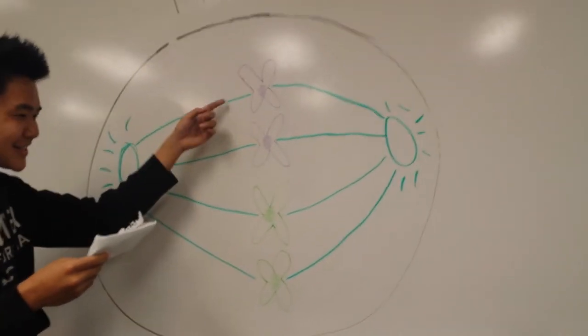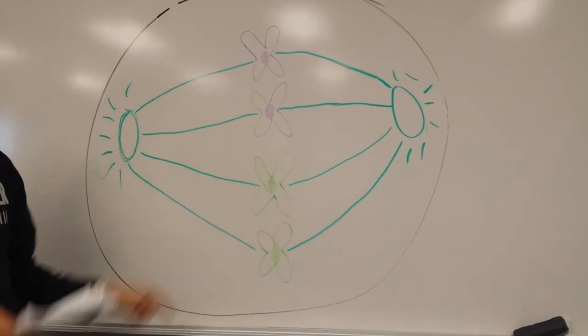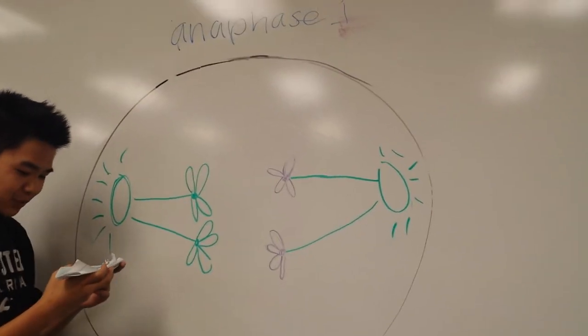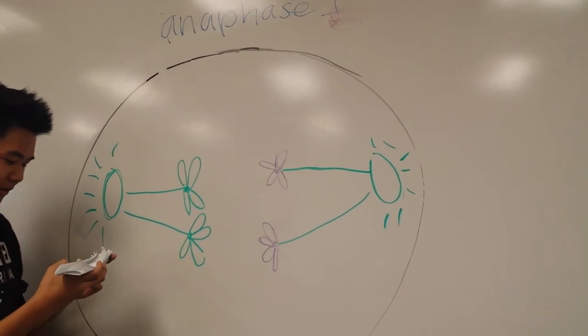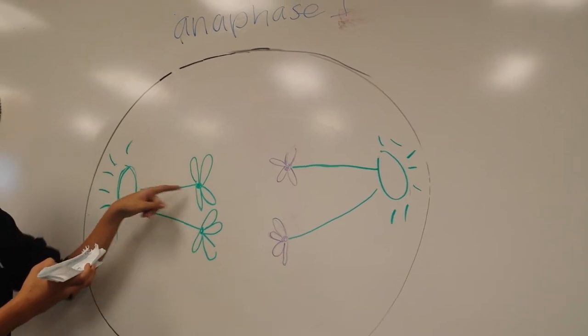The tetrads line up in the middle of the equator where the spindles have already formed. The tetrads pull apart and the chromosomes with two chromatids move towards the spindle fibers.